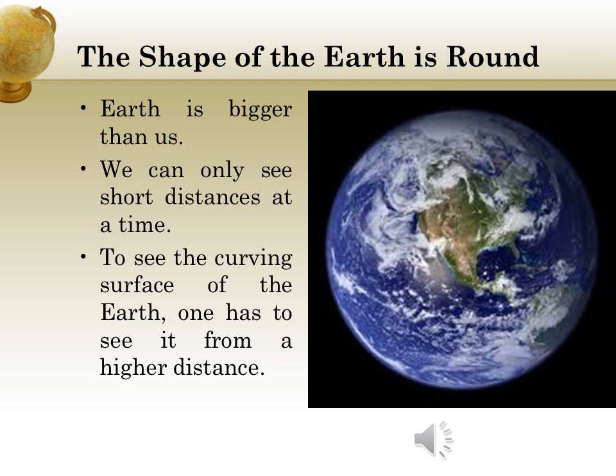We can only see a short distance at a time. To see the curving surface of the earth, you would have to see it from a higher distance. For example, the picture shows the earth as seen from space. You could see the earth's curving surface from a higher distance in space.